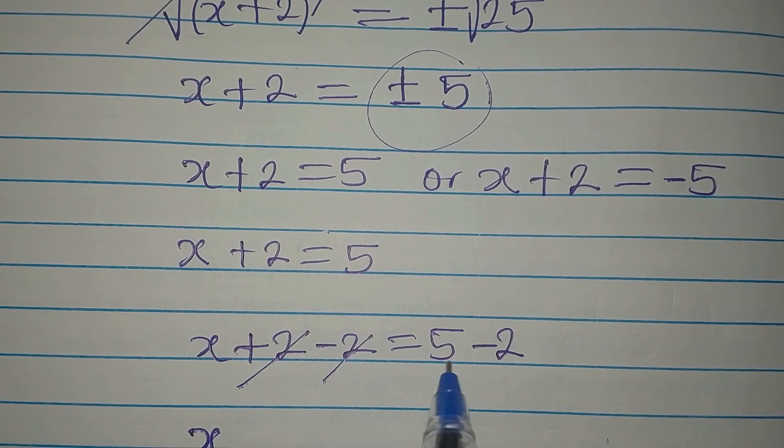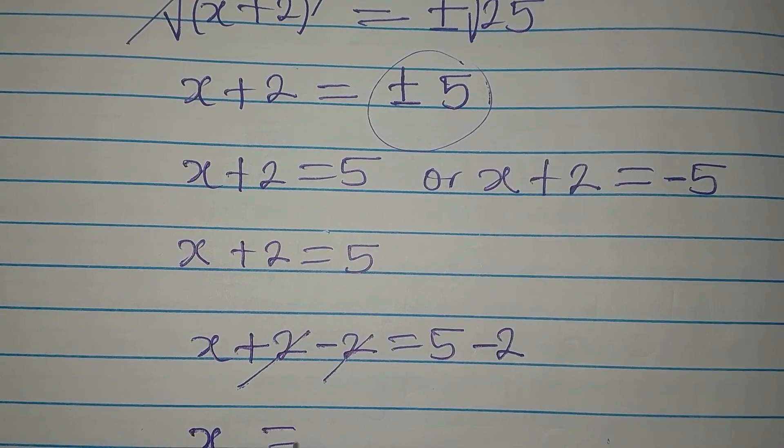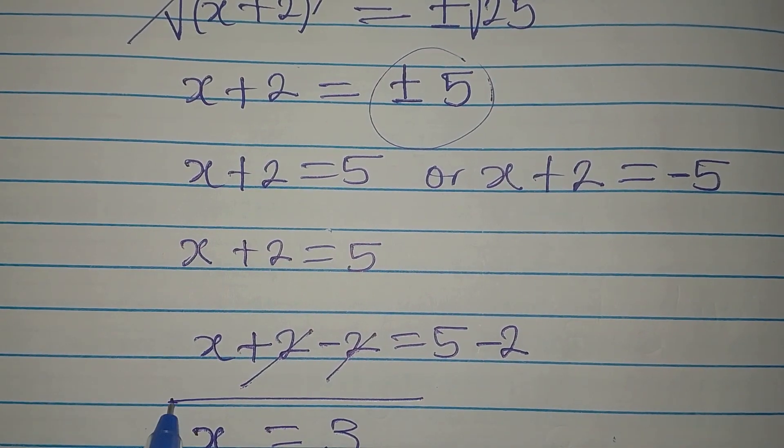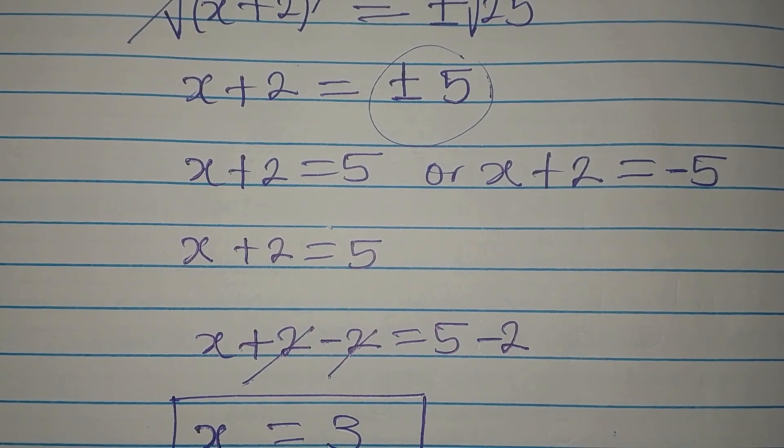Now x, this and this will go. 5 minus 2 is equal to 3. So this means that one of the values of x is x equals 3.